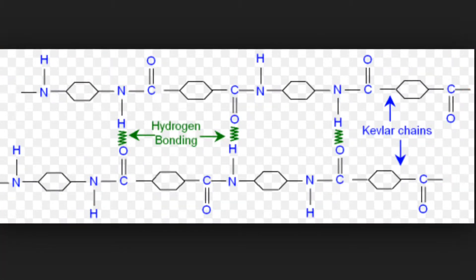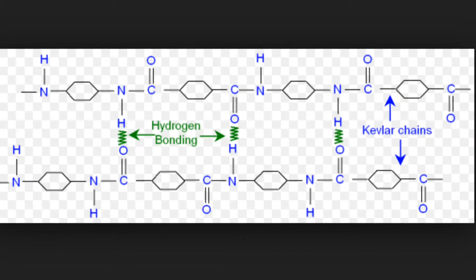Hydrogen bonds are special forms of dipole-dipole interactions. Hydrogen bonds occur when one atom, a hydrogen, is partially positive and another is partially negative. These opposing charges are then attracted to one another, causing a strong bond to form between the two atoms.